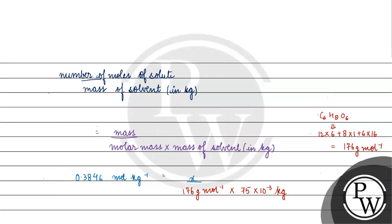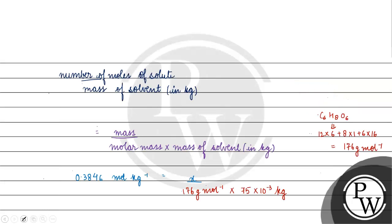Since 1 kilogram equals 1000 grams, 1 gram equals 10⁻³ kilograms. So 75 grams equals 75 × 10⁻³ kilograms.